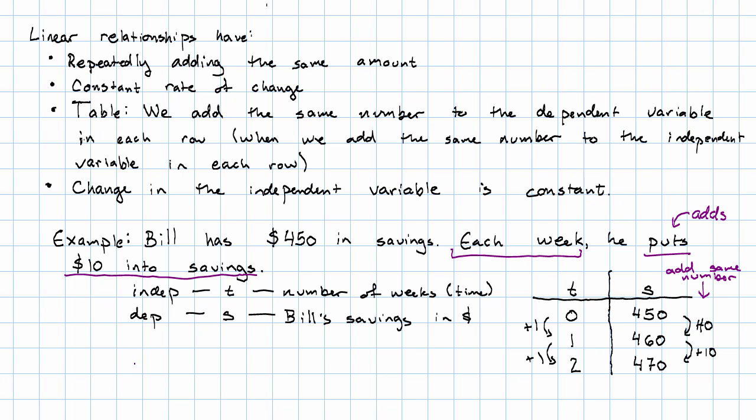What's our linear equation going to be? Bill's saving is the starting value plus the rate of change times t. Okay, that's linear relationships.